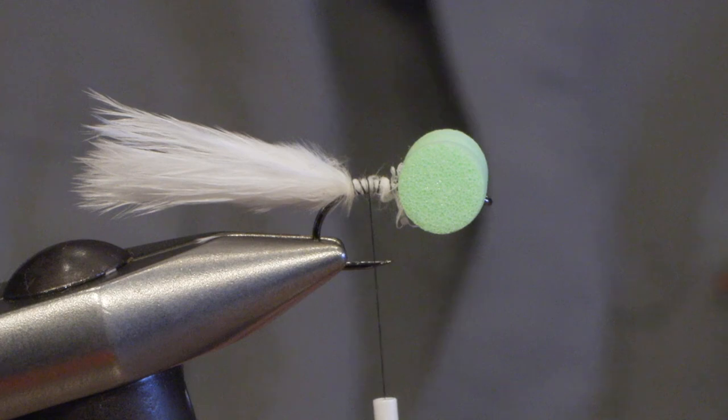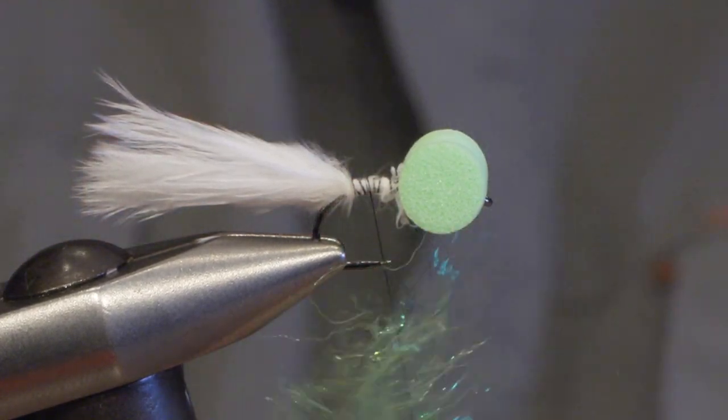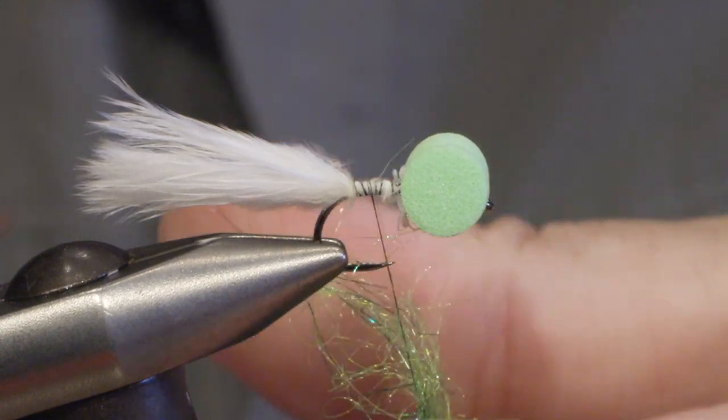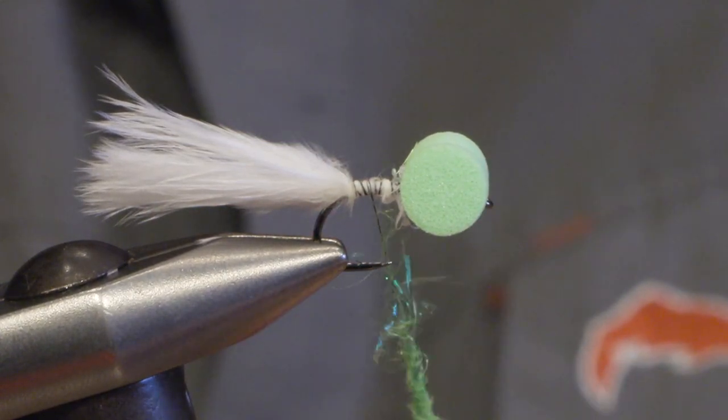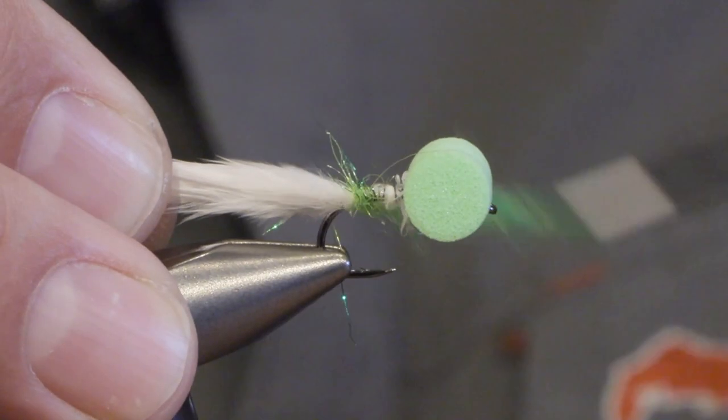I make the body out of dubbing. I'm using, in this case, greenish chartreuse. Cover the body.